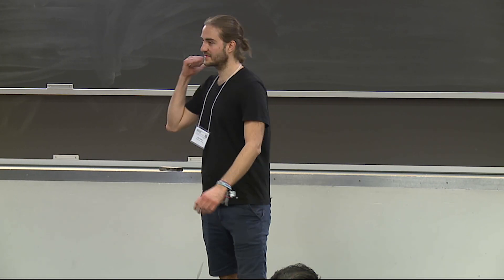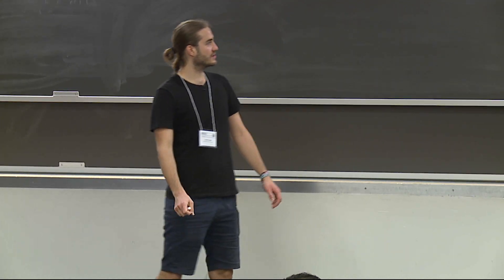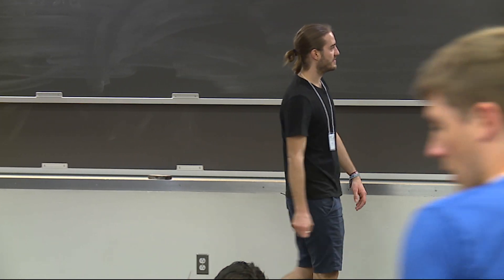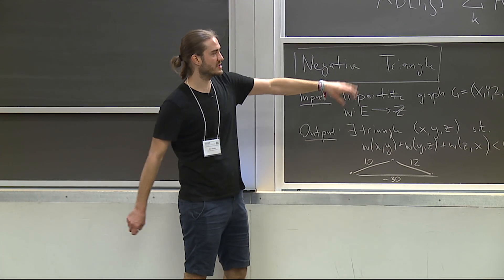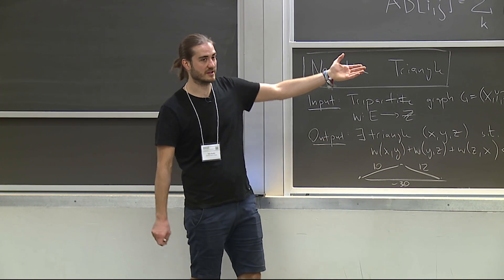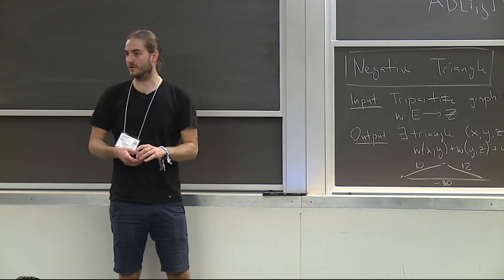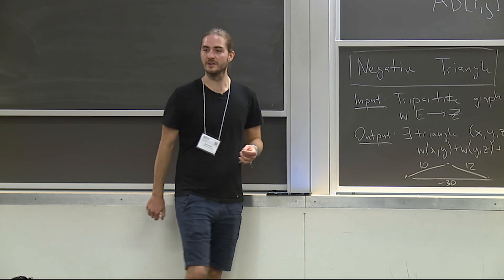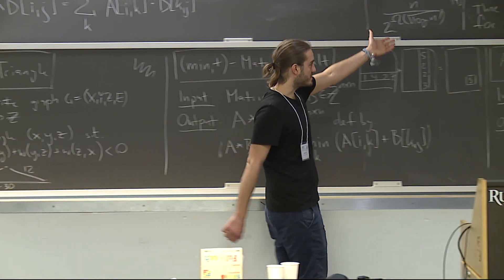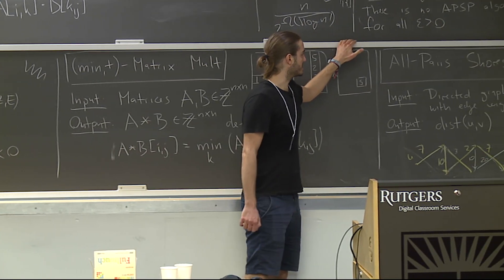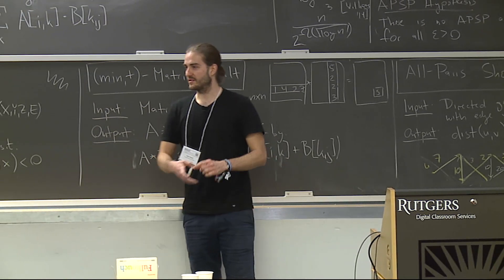Welcome back. Let's continue. In the first part, we've seen that there are three problems — negative triangle, min-plus matrix multiplication, and APSP — all of which do not seem to admit faster algorithms than N cubed. So people came up with the APSP hypothesis, which states that APSP specifically cannot be solved faster than N cubed time.